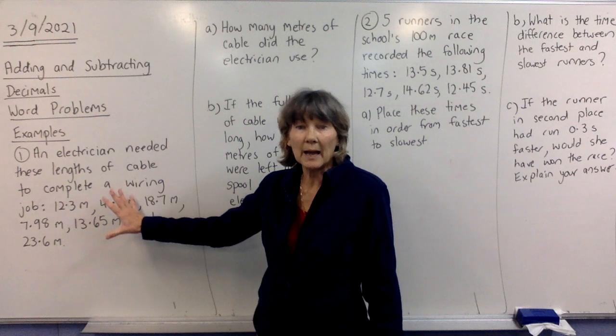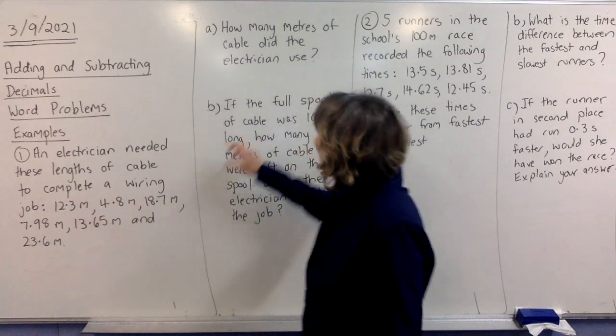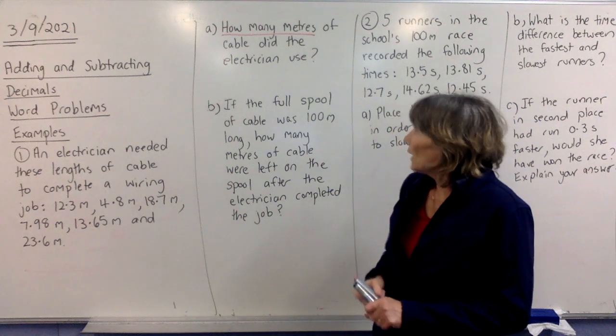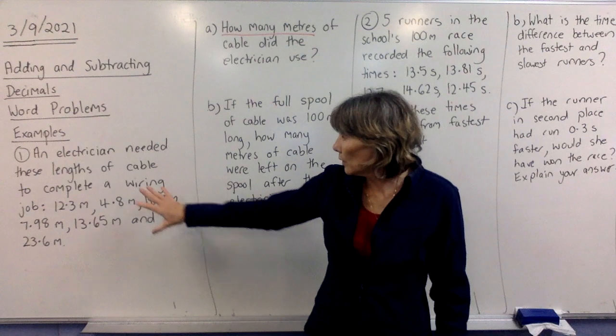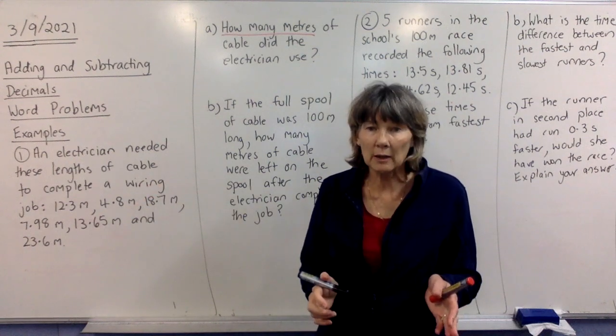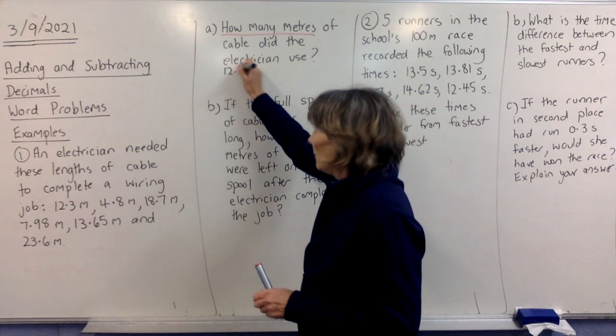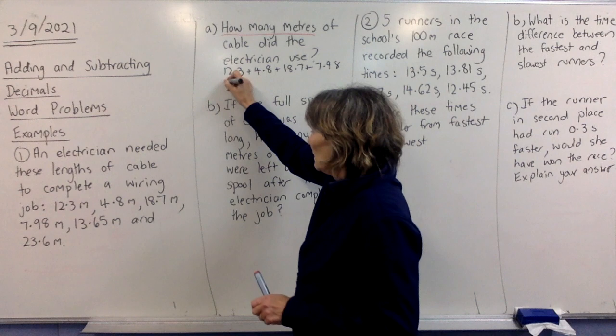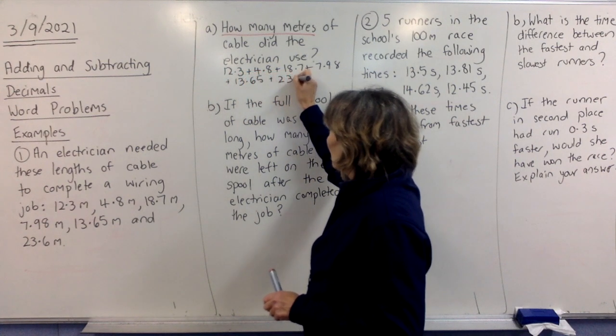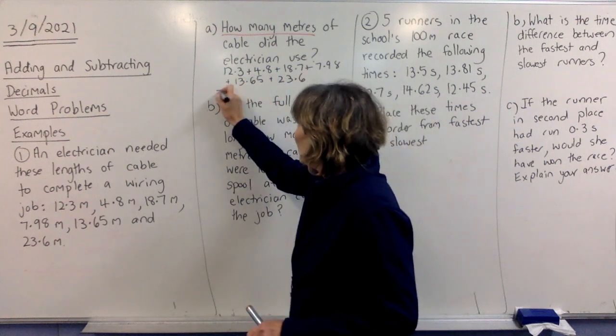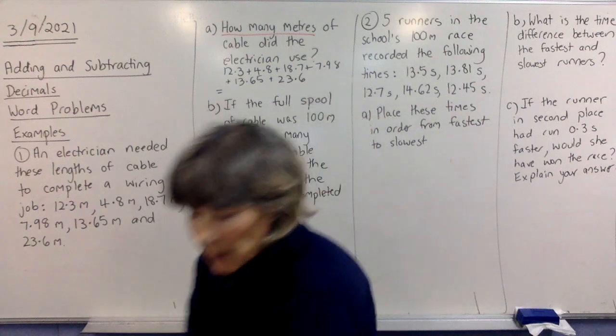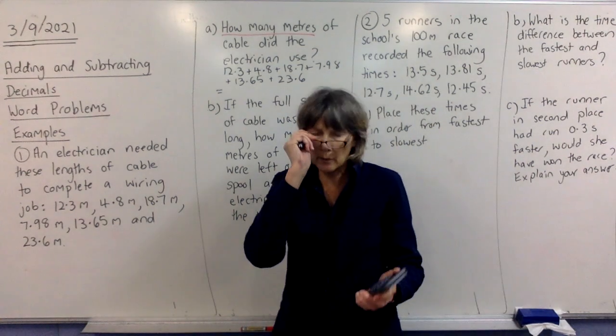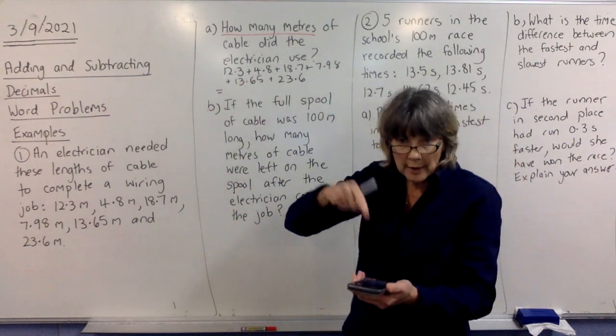And all of this needs to be done to do the wiring in this place. So, the first question says, how many metres, and notice they are all in metres, how many metres of cable did the electrician use for this job? So, all you have to do is add all of these up. So, I don't want you going straight to your calculator. You need to write down what you're adding up. So, we're going to write 12.3 plus 4.8 plus 18.7 plus 7.98 plus 13.65 plus 23.6. Now, you'll notice I ran out of room. I just kept writing on the next line. That's fine. Then you're going to write an equal sign. So, because we have calculators, you don't need to write your adding up your decimals down the page. You can just write them across like I've done there. And now we're going to the calculator. So, you're going to start typing this in. That's your working line. Now you can type it in.